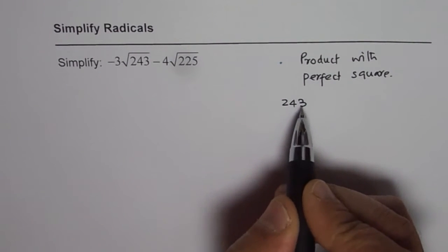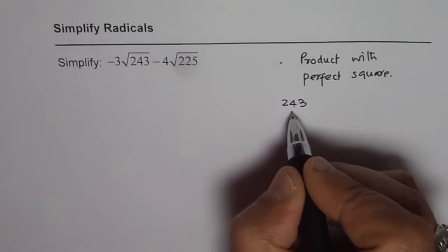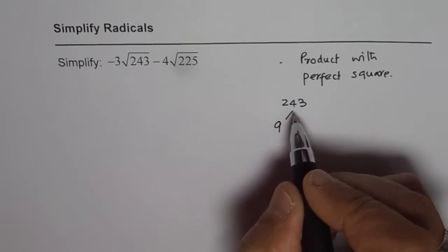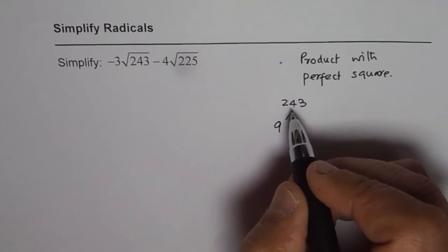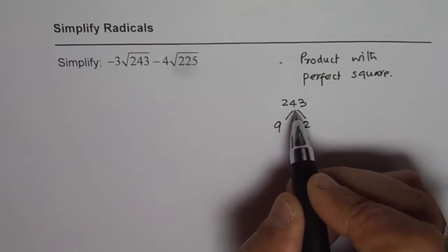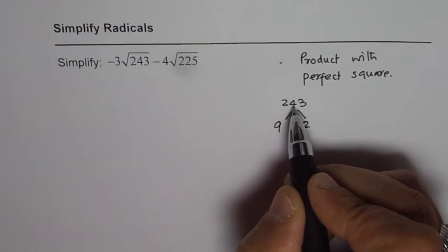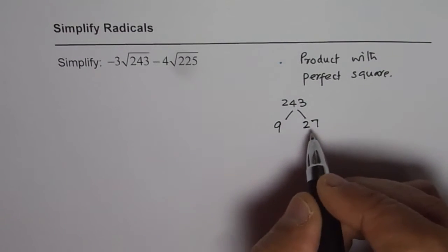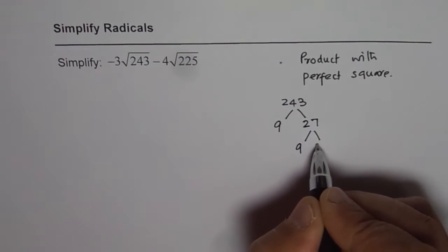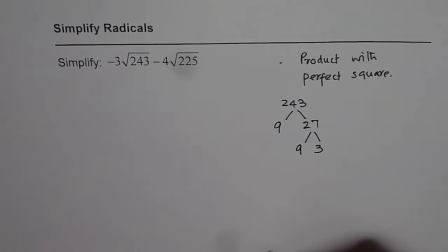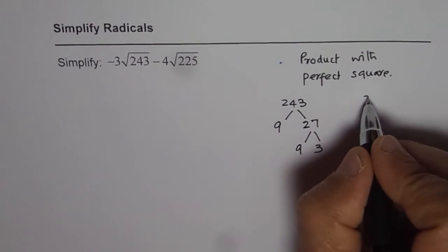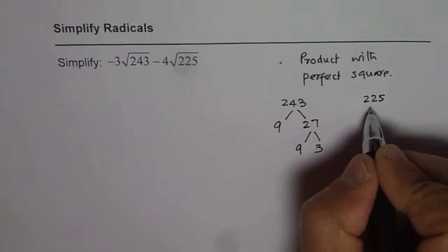For 243: 2 plus 4 is 6, 6 plus 3 is 9, which can be divided by 9. So dividing 243 by 9 — 9 times 27 is 243, and 27 can be written as 9 times 3. So 243 factors as 9 times 9 times 3.